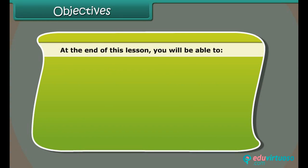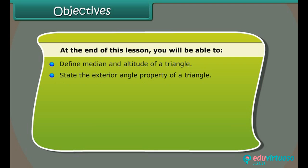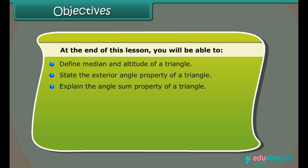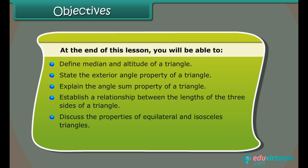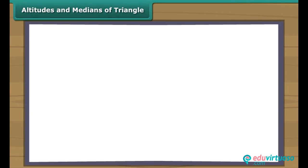Objectives. At the end of this lesson, you'll be able to: define median and altitude of a triangle; state the exterior angle property of a triangle; explain the angle sum property of a triangle; establish a relationship between the lengths of the three sides of a triangle; discuss the properties of equilateral and isosceles triangles; and explain the Pythagoras property of a right-angled triangle.